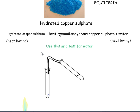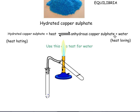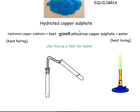Same way we've got heat-hating and heat-loving — if I heat up the reaction, it goes towards the heat-loving side, the endothermic. We can use this as a test for water, because if we had anhydrous copper sulphate — this white stuff — and I added water and it went blue, then I could say yes, it is water that I've added.